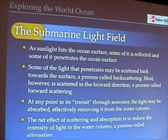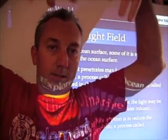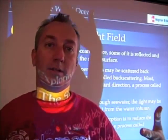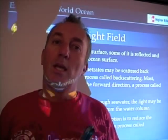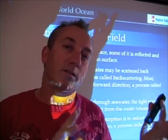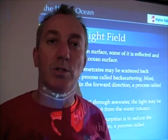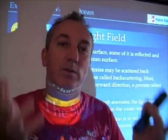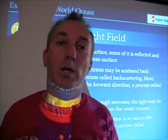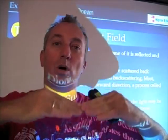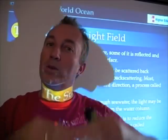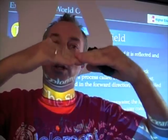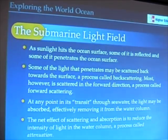As sunlight hits the surface of the ocean, some of it is reflected back, some of it penetrates. Some of that light may be scattered and some of it may be absorbed. If you think about your own experience — diving, submarines, scuba diving — it should make sense that as you go deeper in the water, there's less and less light, because that light is being absorbed and scattered, reducing its intensity as you go deeper in the ocean.